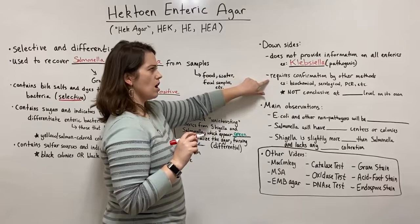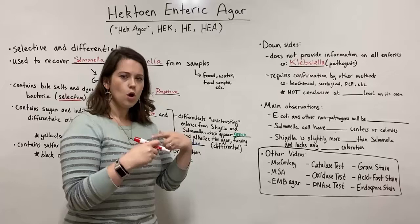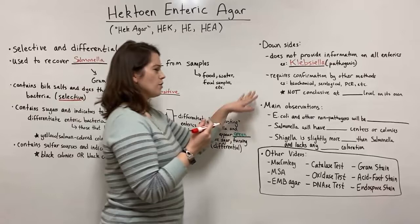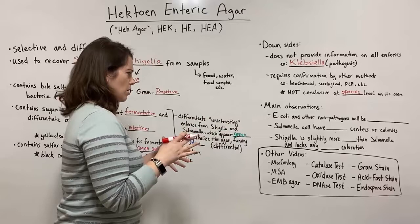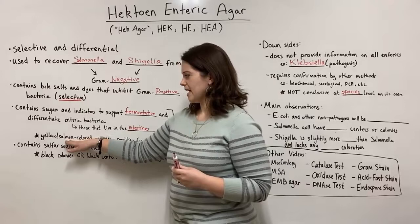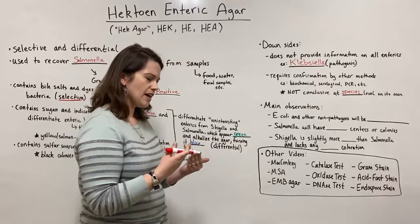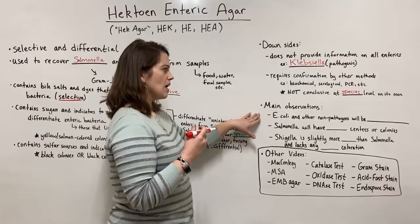Another downside of HEC agar is that it requires confirmation by other methods. Other biochemical methods, serological tests, and PCR-based tests can all confirm what is suspected based on growth on HEC agar. In other words, HEC agar is not conclusive at the species level on its own. Someone using HEC agar cannot differentiate between different species of Shigella, different species of Salmonella, or different species of other enterics that cause salmon-colored colonies. More specific confirmation requires follow-up with one of these other tests.